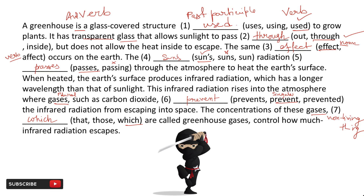This is the entire solved paper. Now let me read the complete passage with all answers filled in: 'A greenhouse is a glass-covered structure used to grow plants. It has transparent glass that allows sunlight to pass through, but does not allow the heat inside to escape. The same effect occurs on the earth. The sun's radiation passes through the atmosphere to heat the earth's surface.' In the examination hall, this will only take you 3 to 5 minutes to solve, but don't close the paper after finishing — please do a revision.